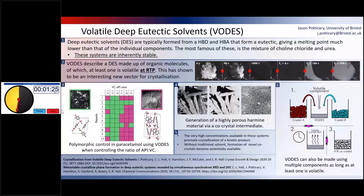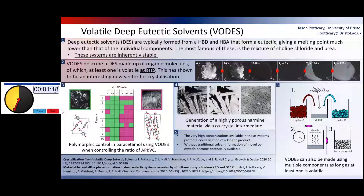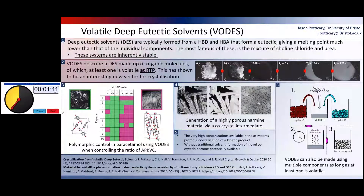Because we're making the solvent out of the API or the organic compound that we're interested in, it's at a very high concentration — we're talking half a gram per ml in the liquid phase. Because there are such high concentrations, we're promoting crystallization of a kinetic product: metastable polymorphs and similar forms.